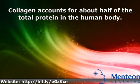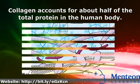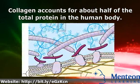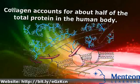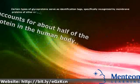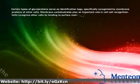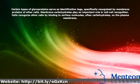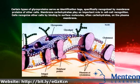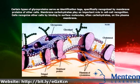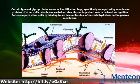Collagen accounts for about half of the total protein in the human body. Certain types of glycoproteins serve as identification tags, specifically recognized by membrane proteins of other cells.